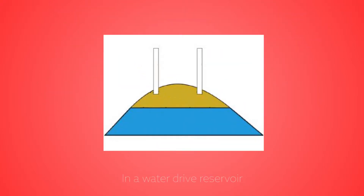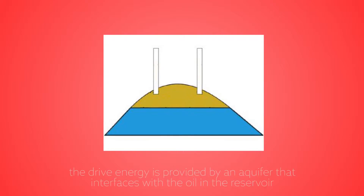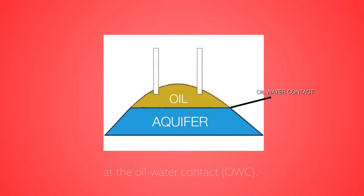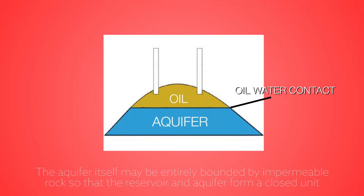In a water drive reservoir, the drive energy is provided by an aquifer that interfaces with the oil in the reservoir at the oil-water contact. The aquifer itself may be entirely bounded by impermeable rock so that the reservoir and aquifer form a closed unit.